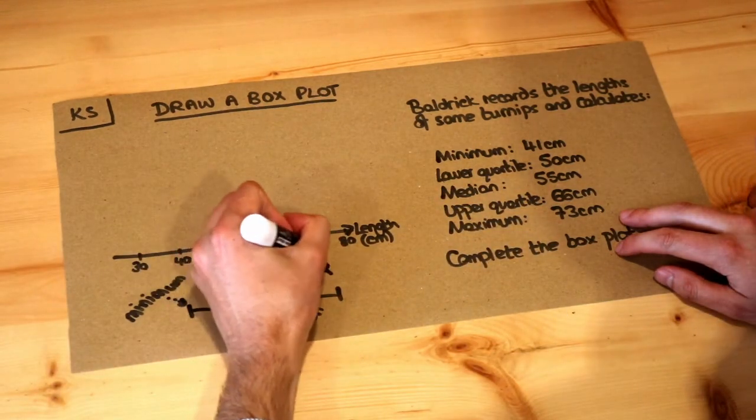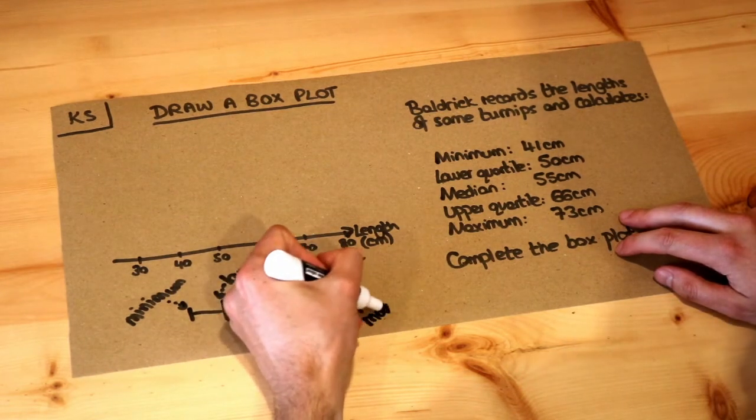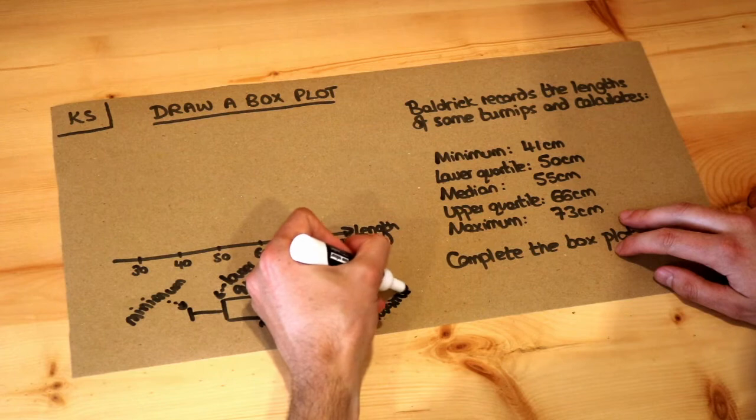The top of the box is the upper quartile and then the top of the whisker is the maximum value. So what's the maximum length of turnip?